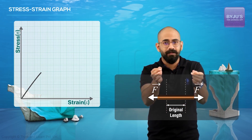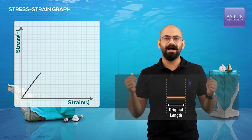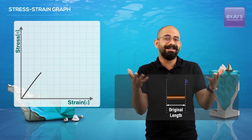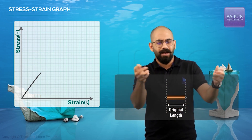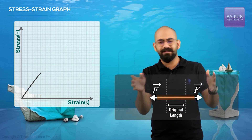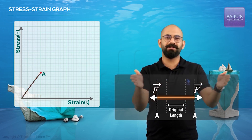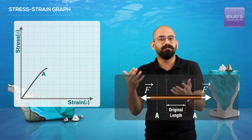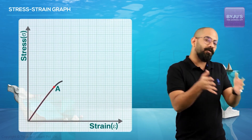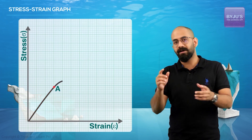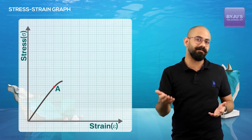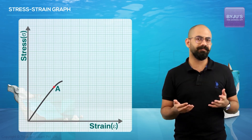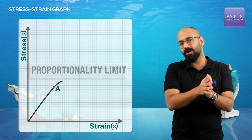If we keep increasing the stress, we find that till we reach a point A on the graph, the proportionality is valid. But if we increase the stress beyond point A, the strain produced is actually much greater — it's no longer proportional. For the same increase in stress, the increase in strain is larger; the slope of the graph reduces. Point A is called the proportionality limit — beyond it, Hooke's law no longer holds.